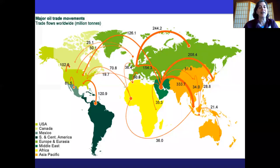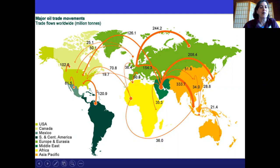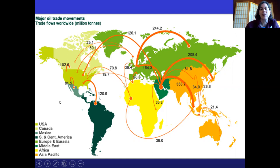This graphic shows where oil comes and goes. You can see that the US imports oil from Venezuela, gets a bunch from Canada, and some from the Middle East. You can track the traffic of oil movement on the planet by looking at this flow map.